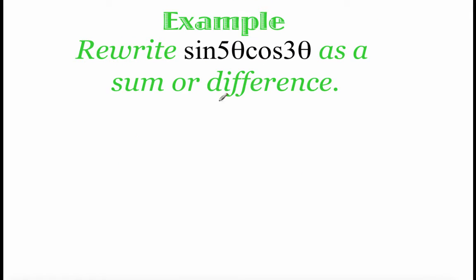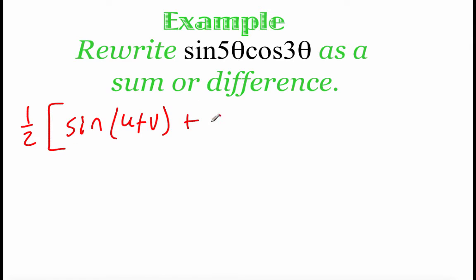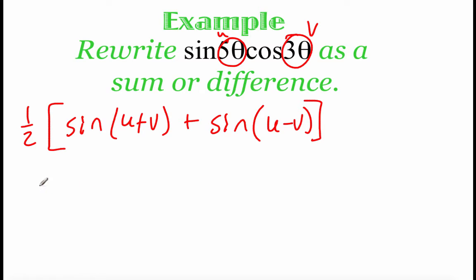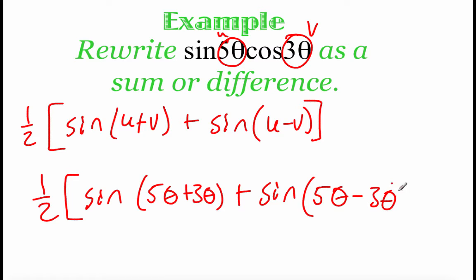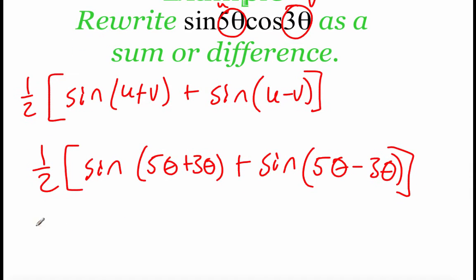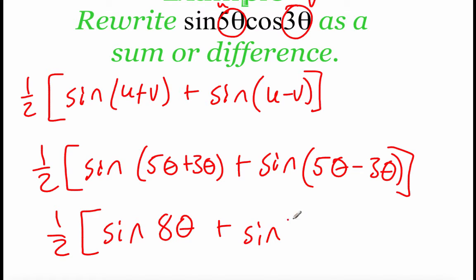In this next example we've got sine of 5θ times cosine of 3θ. We're looking at the formula that goes 1/2 times (sine of (u plus v) plus sine of (u minus v)). With 5θ as u and 3θ as v, we get 1/2 times the sine of (5θ plus 3θ) plus sine of (5θ minus 3θ). Simplifying, that becomes 1/2 times (sine of 8θ plus sine of 2θ), and we leave that as our final answer.